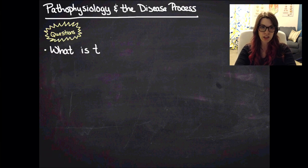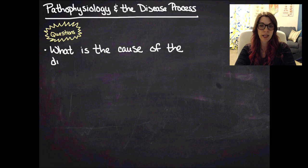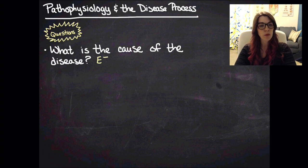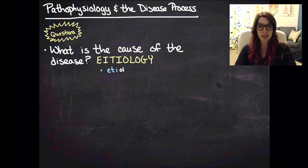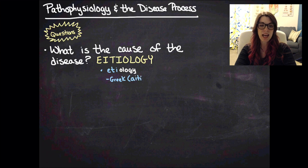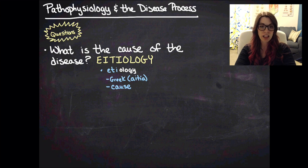The first question is: what is the underlying cause of the disease? And we have a word for that — etiology. It is also from a Greek root; the Greek word is etia, which means cause. So etiology means the study of the cause of a disease.